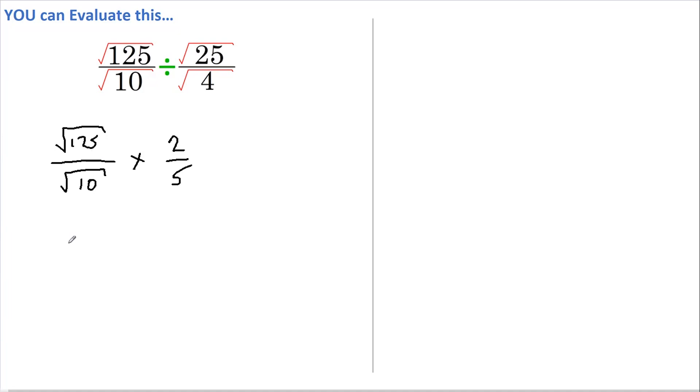This here simplifies to 125 over 10 within the square root sign, but already this doesn't look like the best approach. Of course we can solve it from here, but is there a better way?